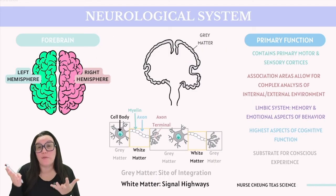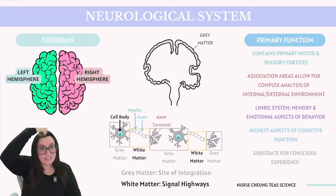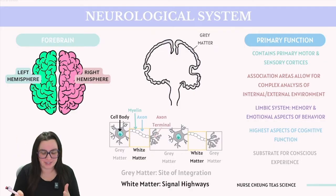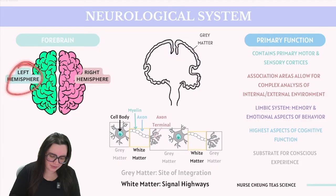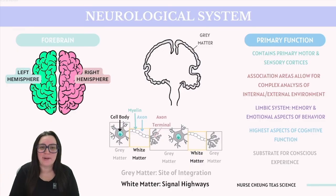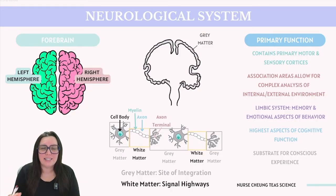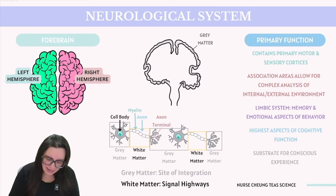Next we have the forebrain, which contains our cerebrum — the largest and most developed part of the brain. It features a distinct fissure running down the middle, dividing it into the left and right hemispheres. The cerebral hemispheres house the primary motor and sensory cortices. The cortex is the cerebrum's outer layer, about one to five millimeters thick, and is composed of gray matter.